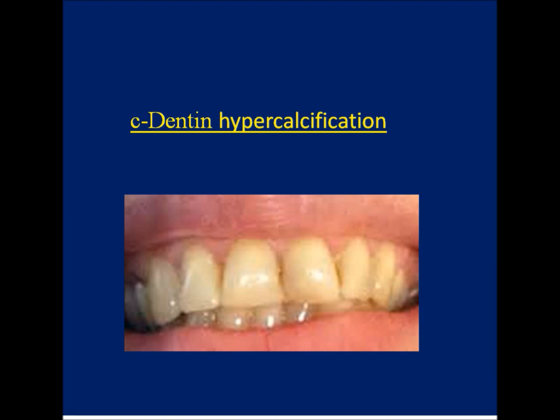C. Dentine hypercalcification. Due to trauma, the pulp may form dentine rapidly to decrease the volume of the pulp. Such new dentine increases the yellow appearance of the tooth. Treatment starts with extracoronal bleaching, and if not beneficial, more aggressive treatment is needed, such as root canal therapy and intracoronal bleaching, or a crown.